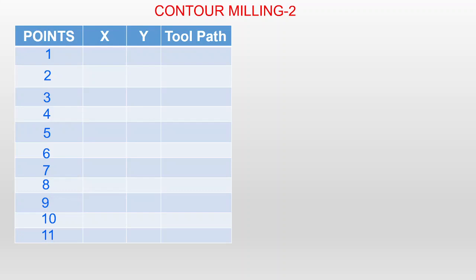The tool path column shows how the tool is moving — from point 1 to 2, point 2 to 3, and so on — making it easy while writing the program. The first point has X = 50 mm, Y = 80 mm, and the tool path is a straight line from point 1 to 2. The second point coordinates are X = 50 and Y = 90, straight line. All paths are straight lines except at R, where a curvature is required.